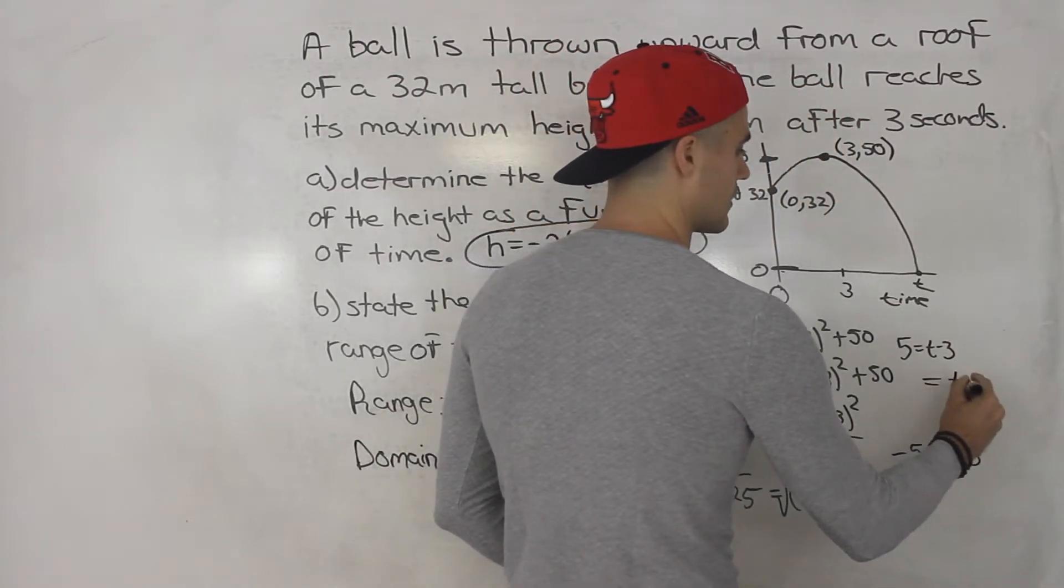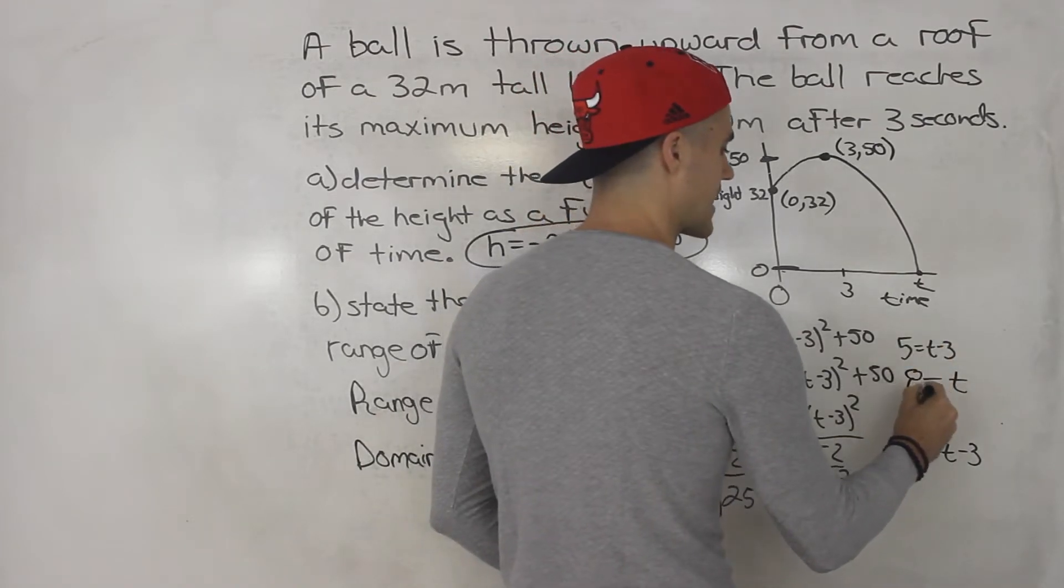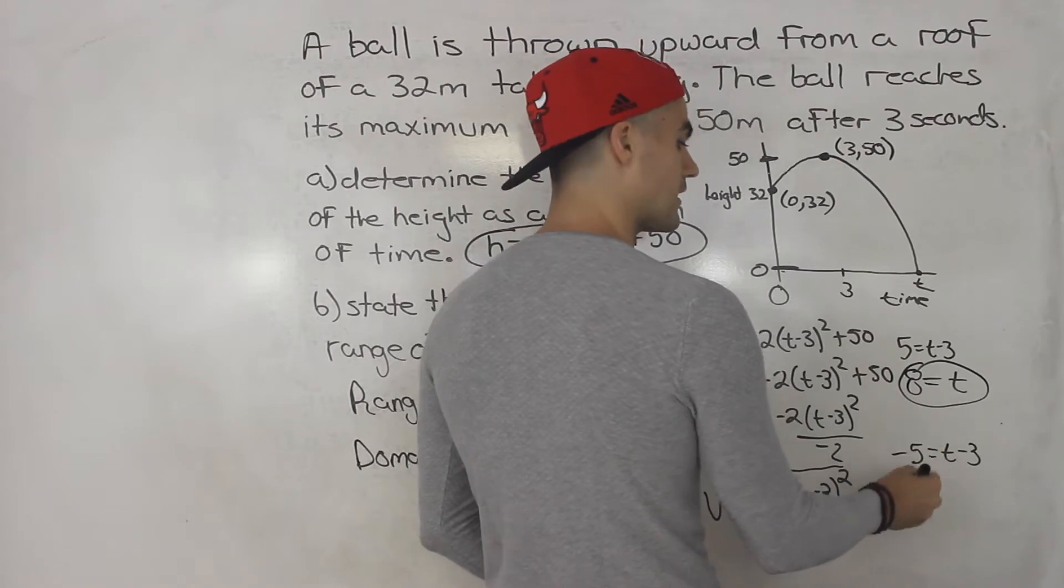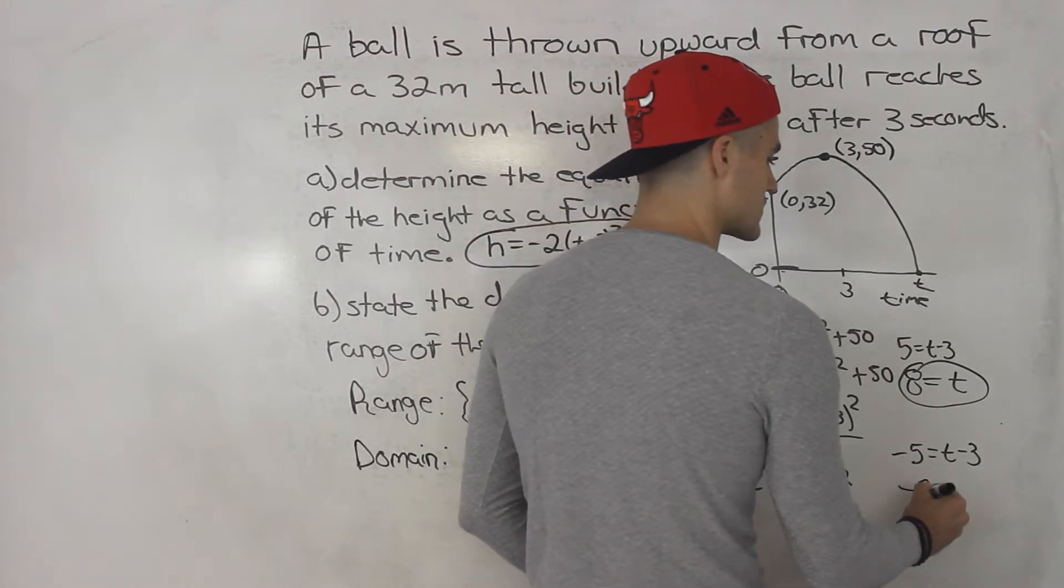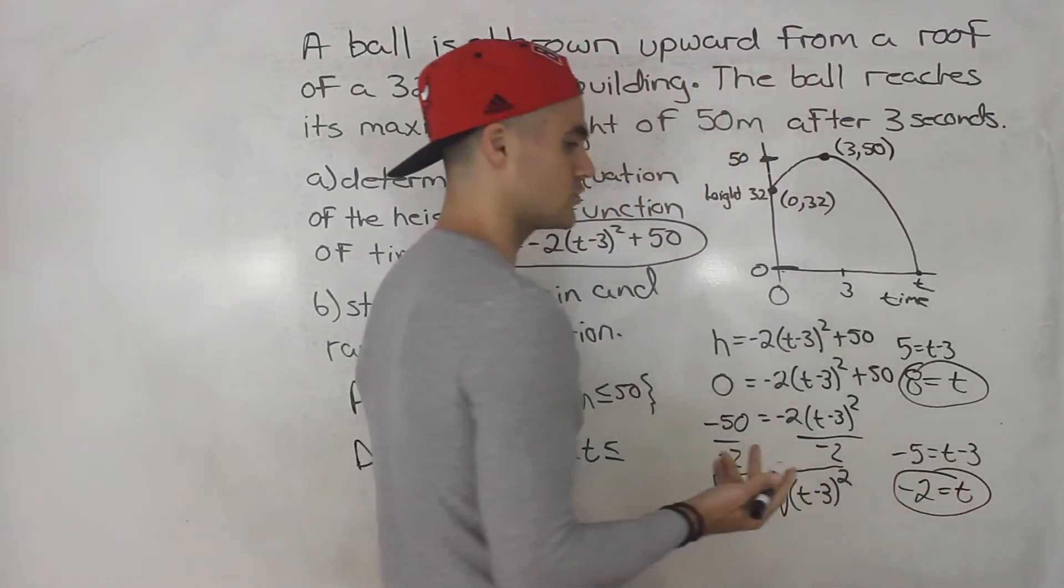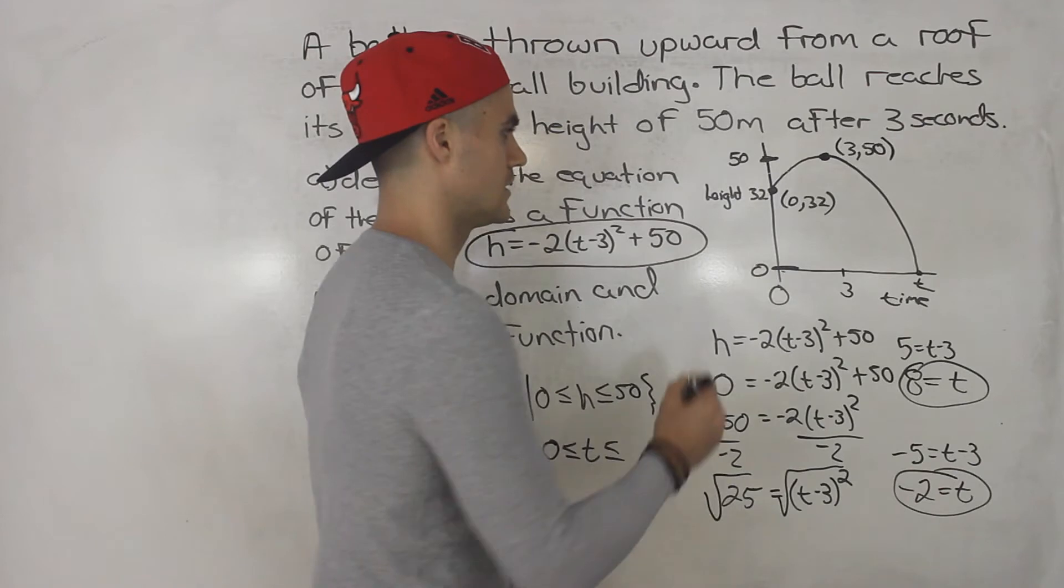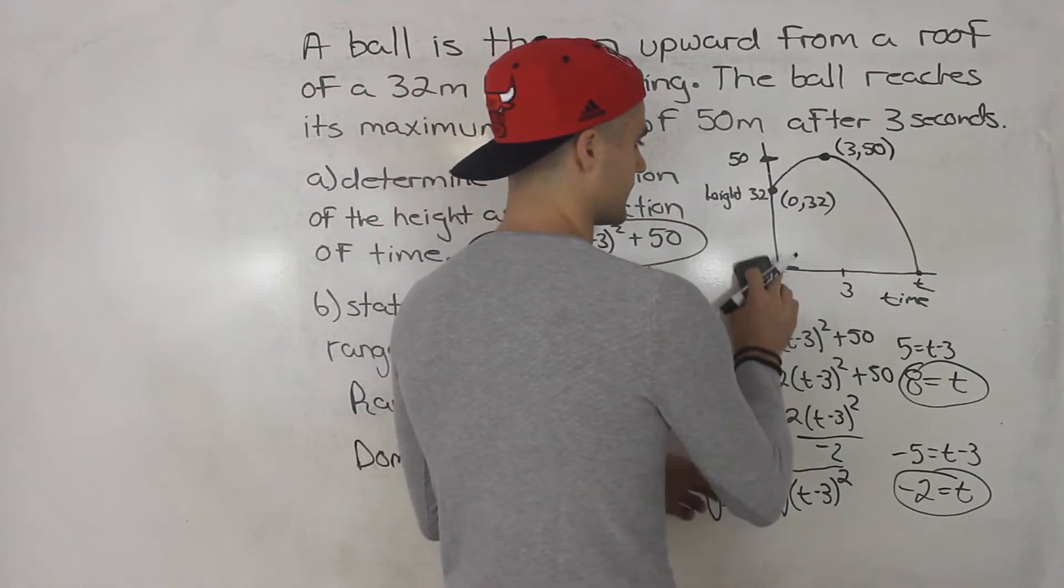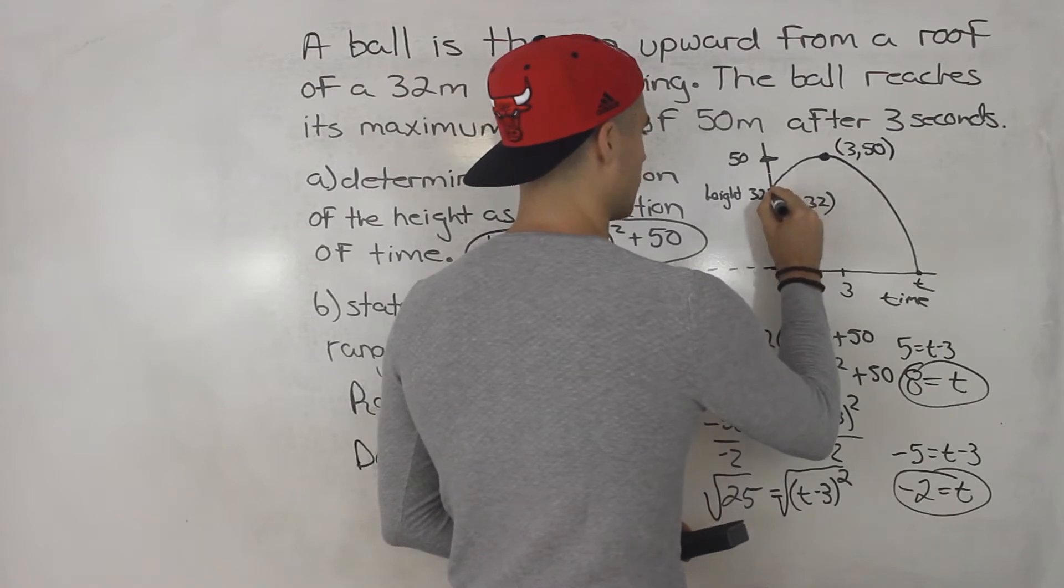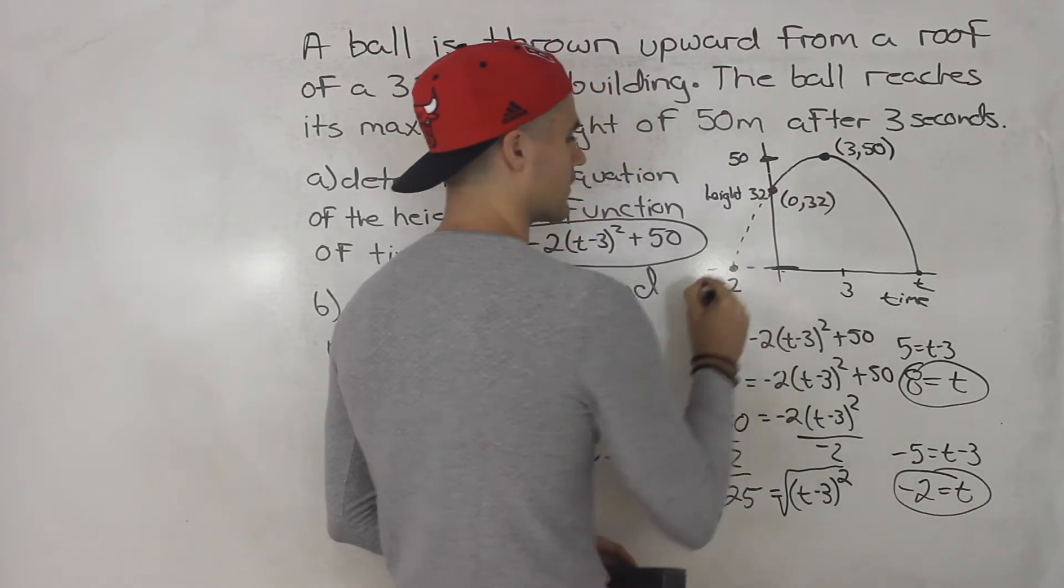So here, if we isolate for t, bring the negative 3 over, 5 plus 3 gives us 8. And then over here, if we bring the negative 3 over, negative 5 plus 3 gives us negative 2. So we got two t values when that height is 0. And this negative 2, it's basically happening, again, if we were to draw out this parabola fully, that's happening here.